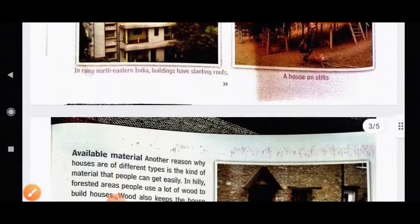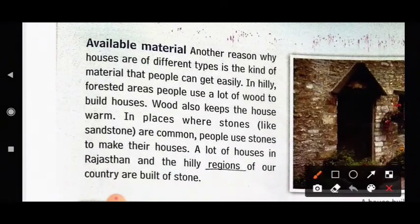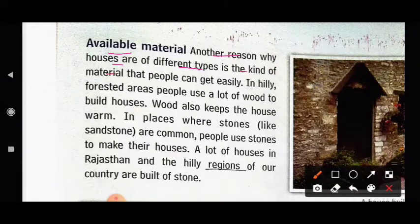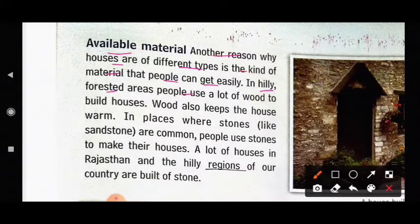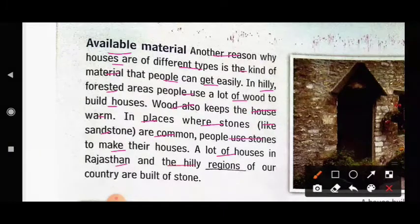Some people live in places that have earthquakes. They build houses with light materials so that people do not get badly hurt if houses collapse during an earthquake. Another reason why houses are of different types is the kind of material available. In hilly, forested areas people use a lot of wood, which also keeps the house warm. In places where stones like sandstone are common, people use stones. A lot of houses in Rajasthan and the hilly regions of our country are built of stone.